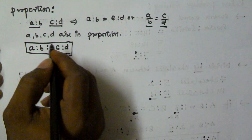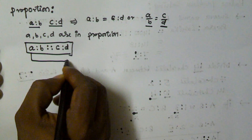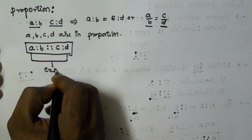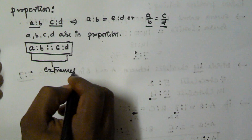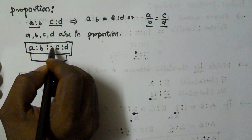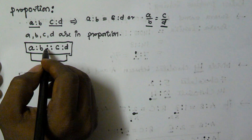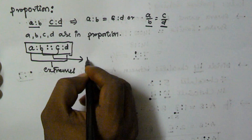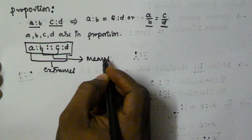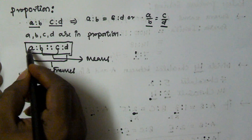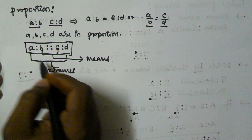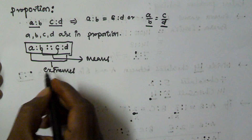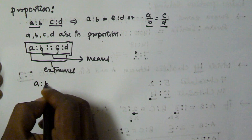In the proportion A colon B double colon C colon D, A and D are called extremes, and B and C are called means. So A and D are the extremes, and B and C are the means.